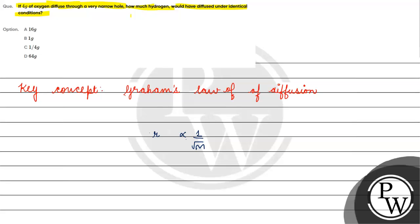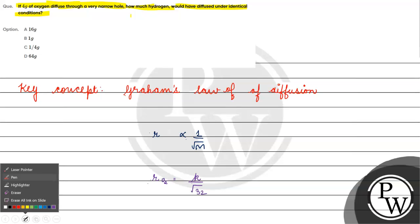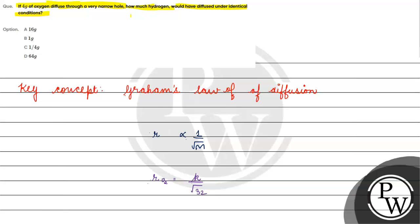It is inversely proportional to the molecular mass of the gas. So if we want to write the rate of diffusion, we will have K divided by root M. For oxygen, the atomic mass of an oxygen atom is 16 grams, but here we have a diatomic molecule, so the molecular mass will be 16 into 2, which is 32 grams.